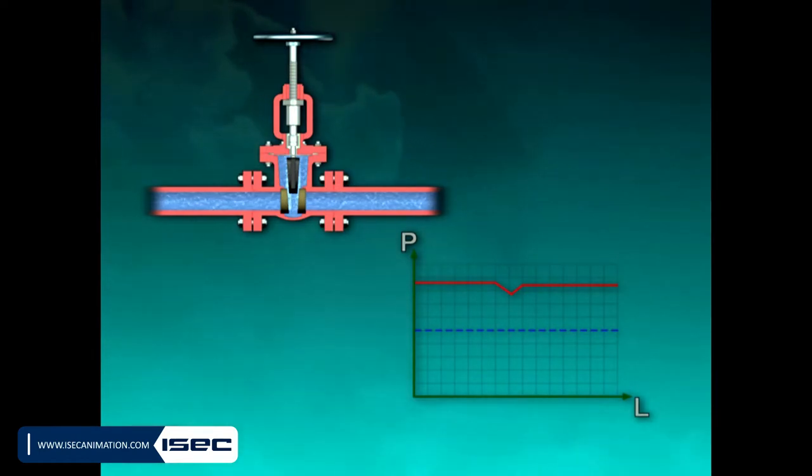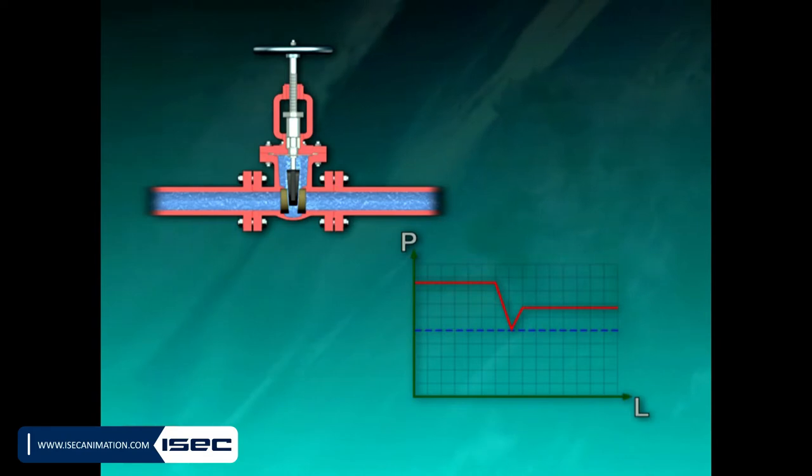When the valve is nearly closed and the flow path is restricted by the disc, the speed of the fluid in the throat of the valve increases.